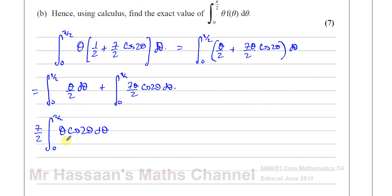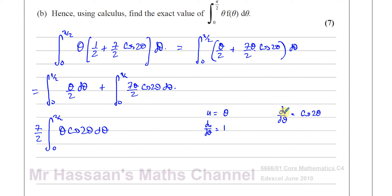This is a product of two separate functions, so I'll use integration by parts. I'll let u = θ, so du/dθ = 1, and dv/dθ = cosine 2θ. Integrating cosine 2θ gives sine 2θ, but with the inner function I divide by 2, so v = one half sine 2θ.